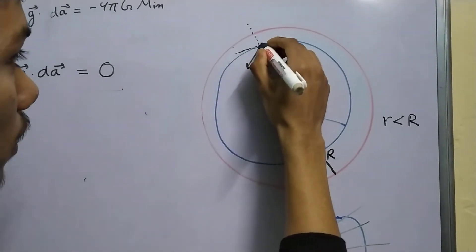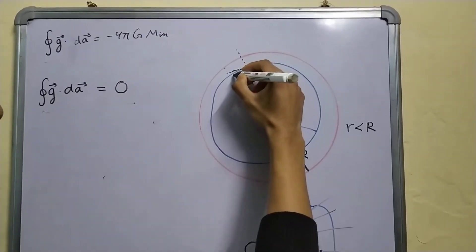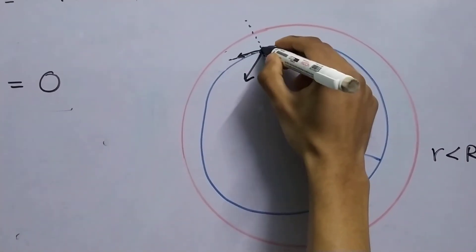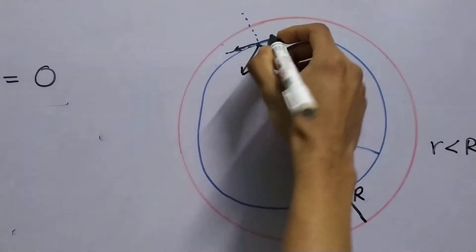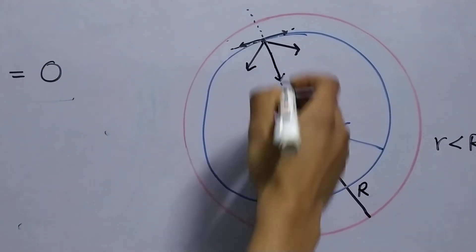So, the tangential components, tangential meaning tangent to the radius, these components will cancel each other out, leaving us with the field in our radial direction.